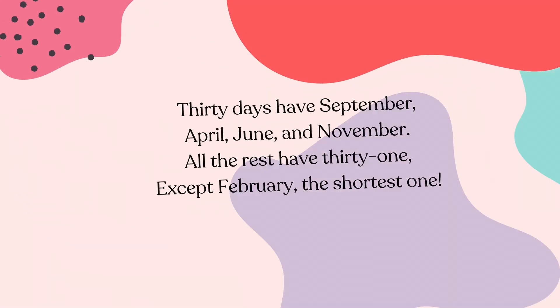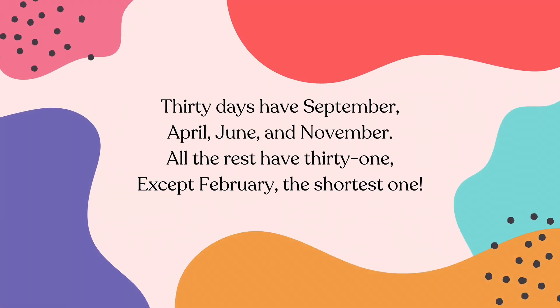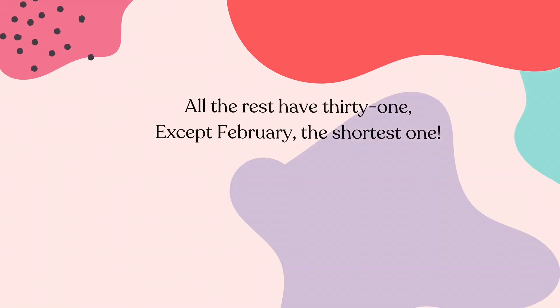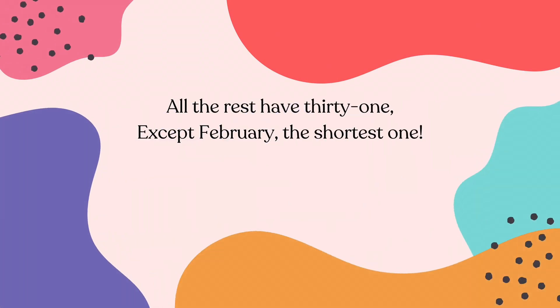So we can remember — April, June, September, November have 30 days. February, the shortest one.